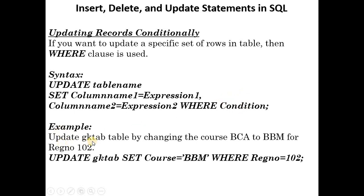For example, to update gk_tab by changing the course from BCA to BBM only for register_number 102: UPDATE gk_tab SET course = 'BBM' WHERE register_number = 102. This goes only to the row with register_number 102 and changes the course column to BBM.